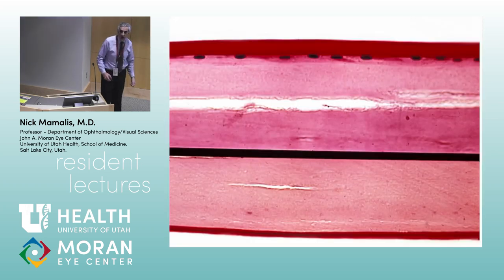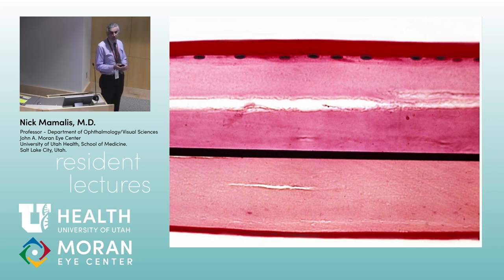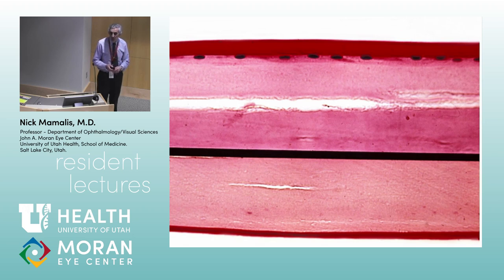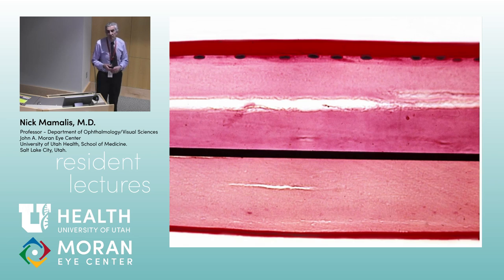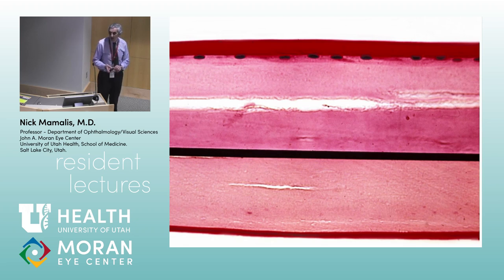Rachel, what am I showing here and what's the stain? It's the lens capsule, and the stain is PAS. Remember, the lens capsule is the thickest basement membrane in the body — and we always claim the eye is the most important part of the body. Anteriorly you see the lens capsule and the lens epithelial cells underlying it. Posteriorly we see the posterior capsule and no lens epithelial cells.